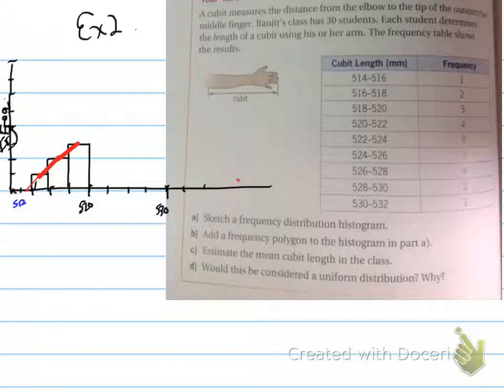Now, estimate the mean cubit length in the class. How do we find the mean? This is in the last unit, so I'm assuming you all know how to do this. What we want to do is look at this and find the midpoints of all of these values, and then weight them according to this. So we're going to find a weighted mean. Once we do that, we can determine the mean cubit length of the class.